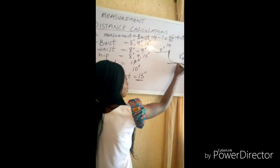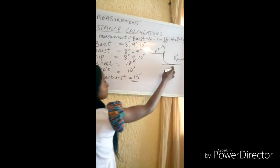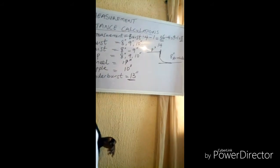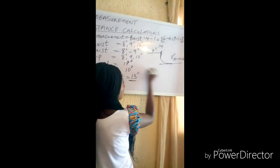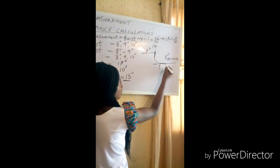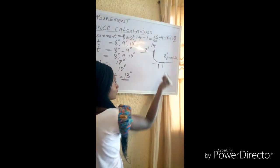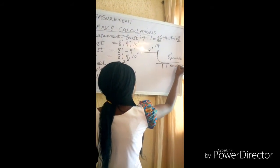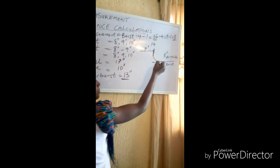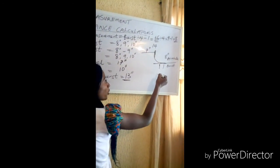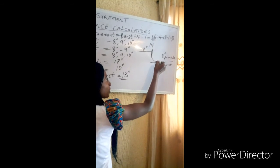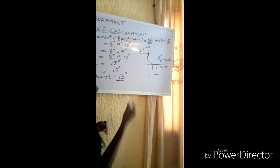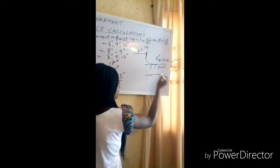Under this armhole, we are going to mark our bust measurements. If our bust measurement is 36, we divide it by 4, giving us 9 inches. You mark your 9 inches here plus your sewing allowance — that is your bust measurement. The distance from this bust measurement to your waist measurement is 8 to 9 inches. This is the line for the waist measurement. If the waist is 34, you divide it by 4, then add your sewing allowance.